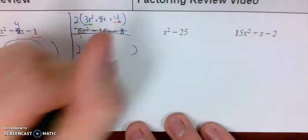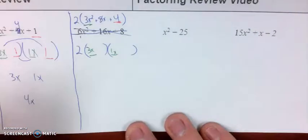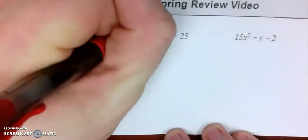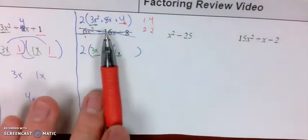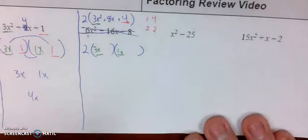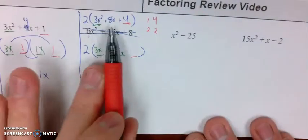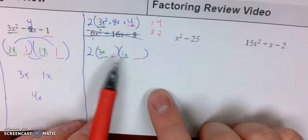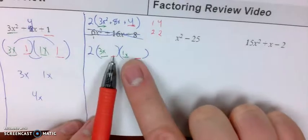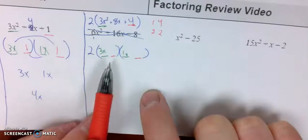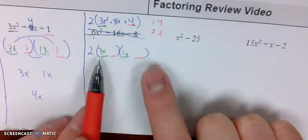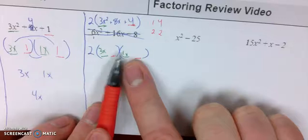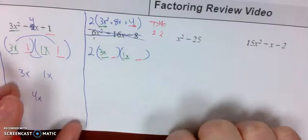That 2 is going to hang out out front, and now I'm going to focus on 3x squared plus 8x plus 4. Values that multiply to be 3x, there's only one way, it's 3x times 1x. Values that multiply to be 4, either 1 and 4 or maybe 2 and 2. My goal is to get a combination that would add up to be 8. If I did 1 and 4, that would give me 12x and 1x or 3x and 4x. Neither works.